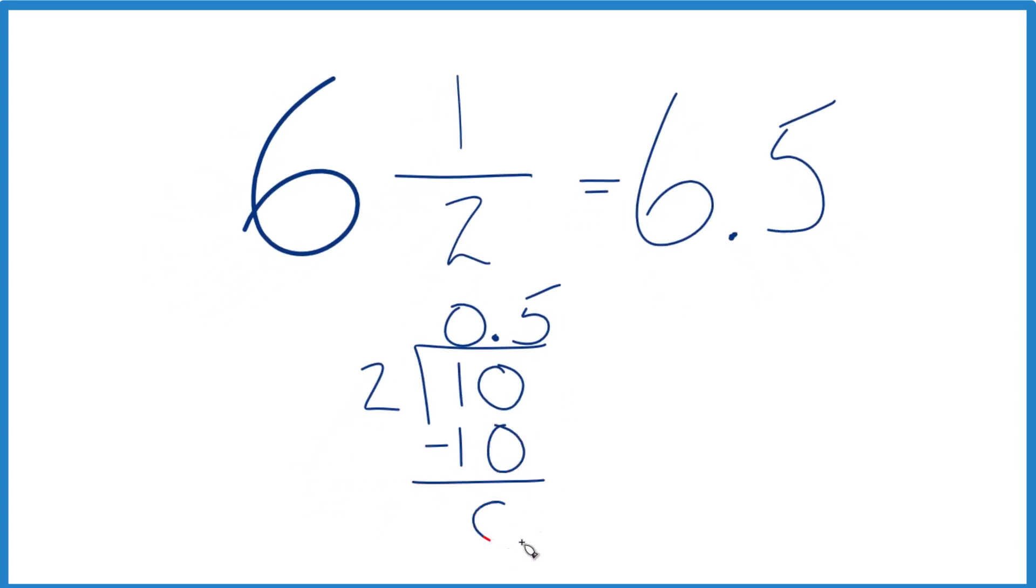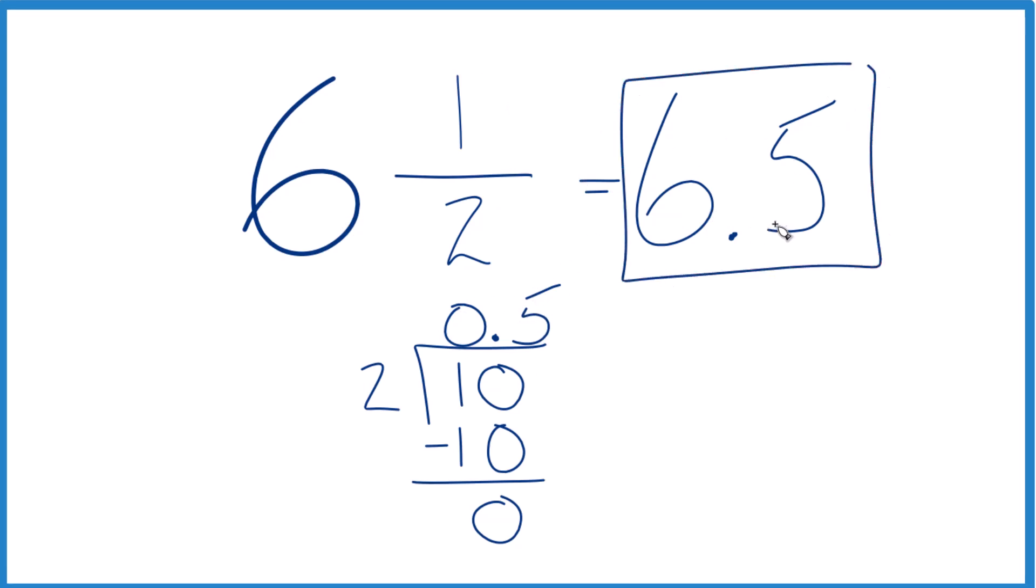Subtract, no remainder. So we have 6.5. That's the same as six and a half. We have six plus 0.5, which gives us 6.5, the decimal we get when we convert six and a half to a decimal.